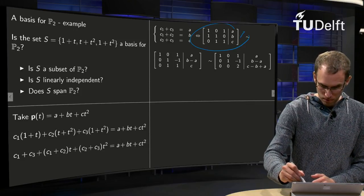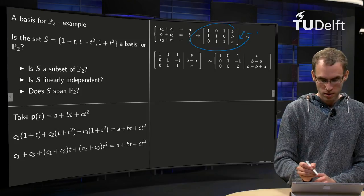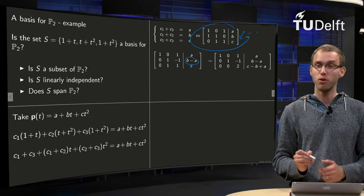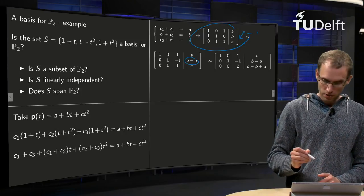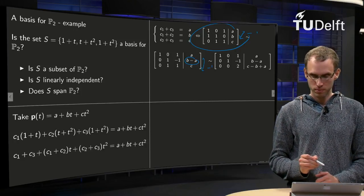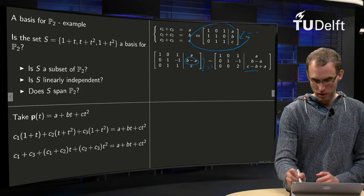First, we do here row 2 minus row 1. And then we get a, b minus a over there, so that's kind of awkward, but okay. And then we continue the row reduction, we do row 3 minus row 1 over there. And then we get a horrible term over here.